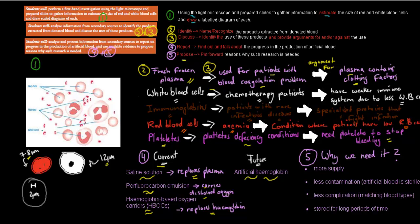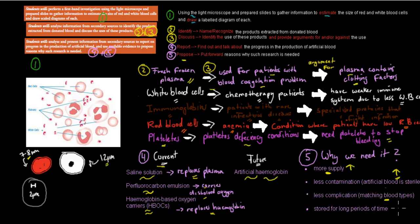We need to propose reasons why such research is needed. First, there's a shortage of blood supply, so making artificial blood increases supply. Because artificial blood is sterile, there are fewer problems with infecting people with contaminated blood. There are also fewer complications since artificial blood has no blood types, removing issues with blood type matching. Additionally, it can be stored for longer — normal blood lasts weeks or months, whereas artificial blood can last for years in storage.